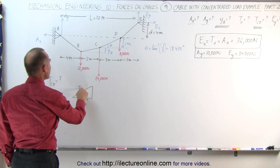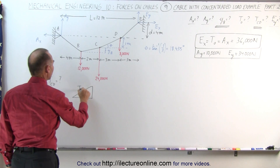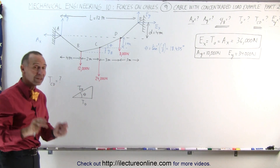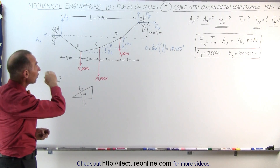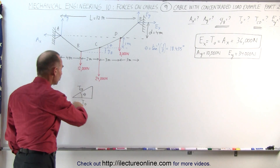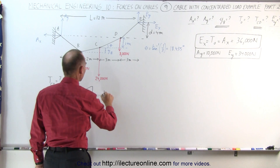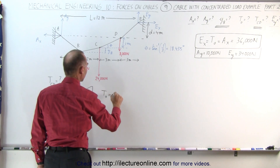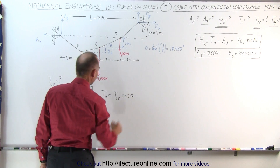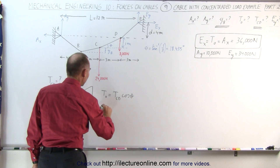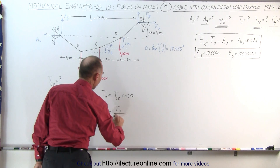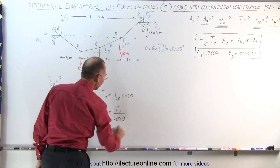We're looking for T_CD. We know the horizontal component of the tension in each of the sections because they're all equal. We can say that T sub-naught equals the hypotenuse times the cosine of angle theta, which means that the tension from C to D is equal to the horizontal component divided by the cosine of theta.